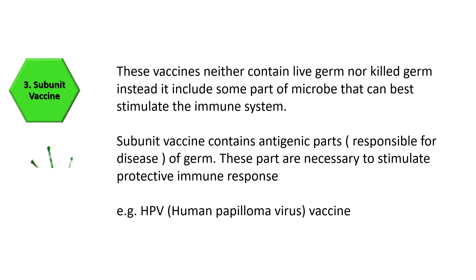Subunit vaccines contain neither live nor killed germs. Instead, they include only specific parts of microbes that can best stimulate the immune system — specifically the antigenic parts of the germ that are necessary to stimulate a protective immune response. An example is the HPV (human papillomavirus) vaccine.